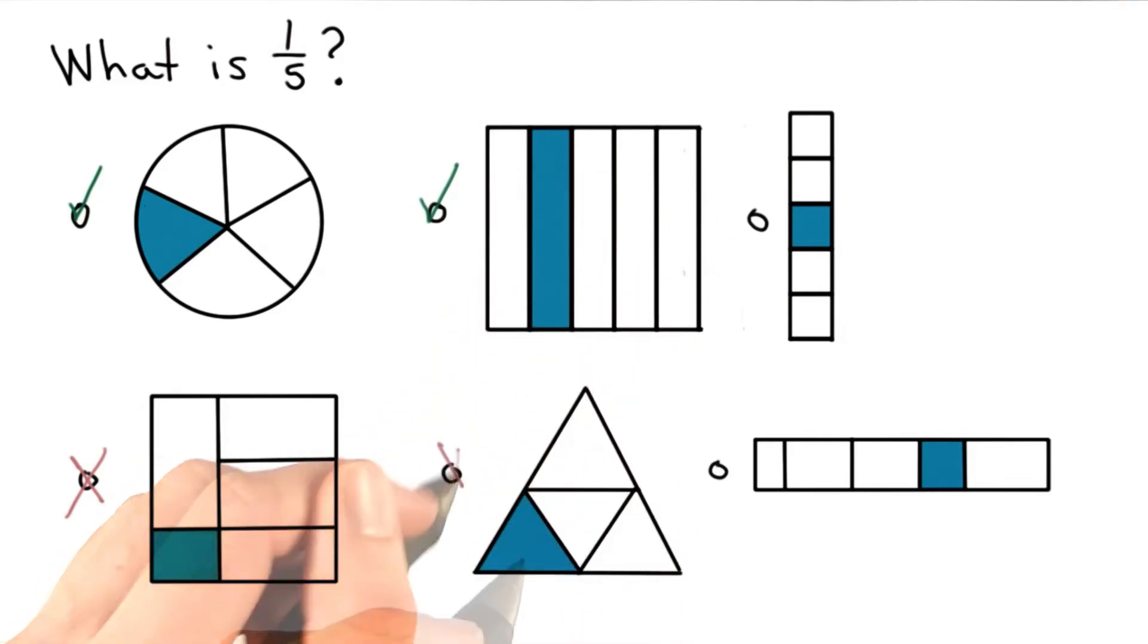This triangle is also not correct. I do have one piece shaded, but I have one of four, so this one is really one-fourth.